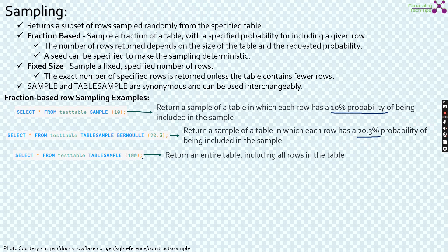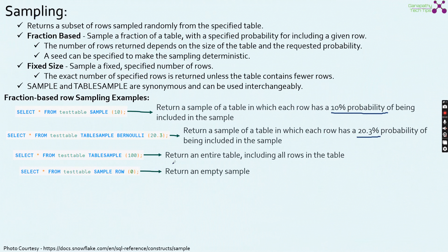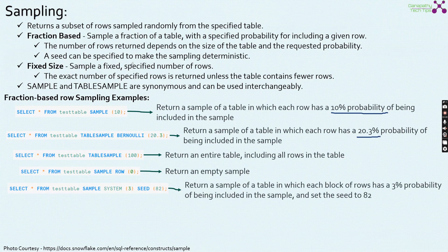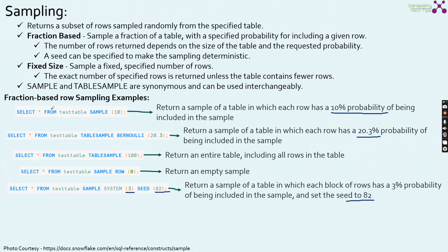Using the direct number 100 will return the entire table including all rows. If you mention 100, it will return all rows in the table. If you use 0, it will return only an empty sample. Finally, we can utilize the seeding option — SAMPLE SYSTEM(3) with SEED(82) returns a sample of the table where each block of rows has a 3% probability of being included, with the seed set to 82. These are the various methods of probability-based sampling available in Snowflake.